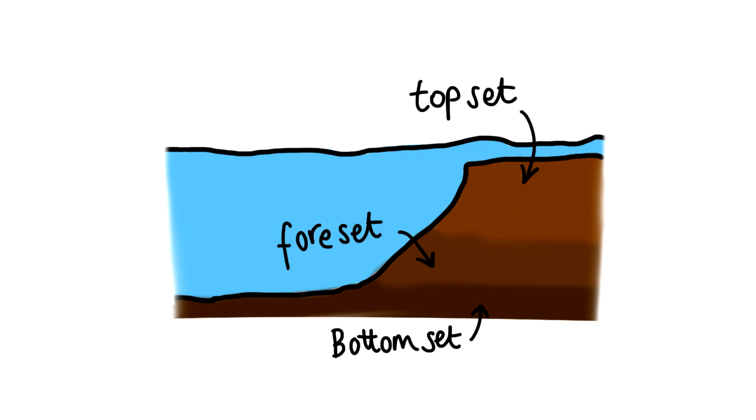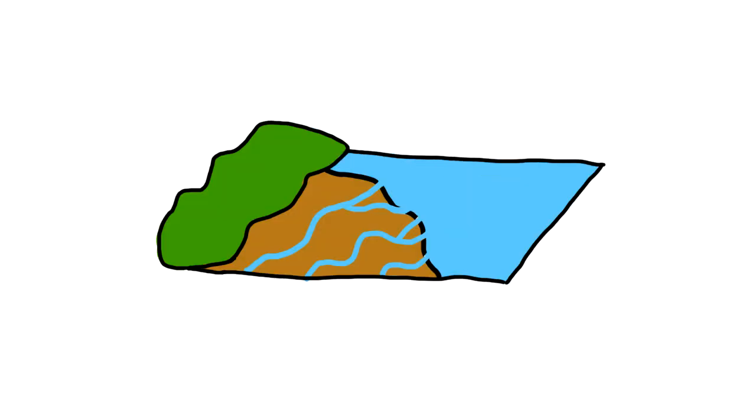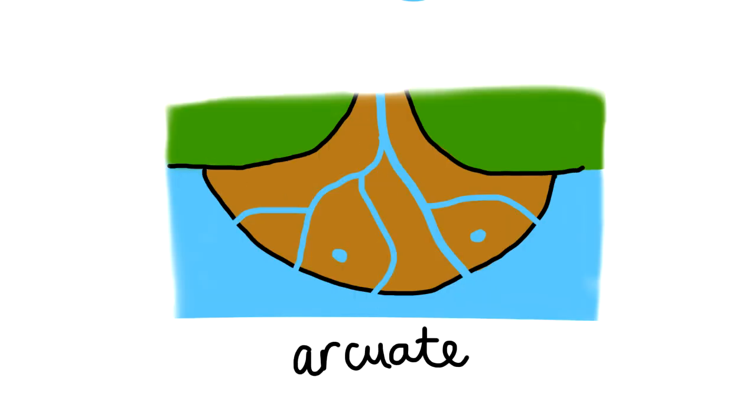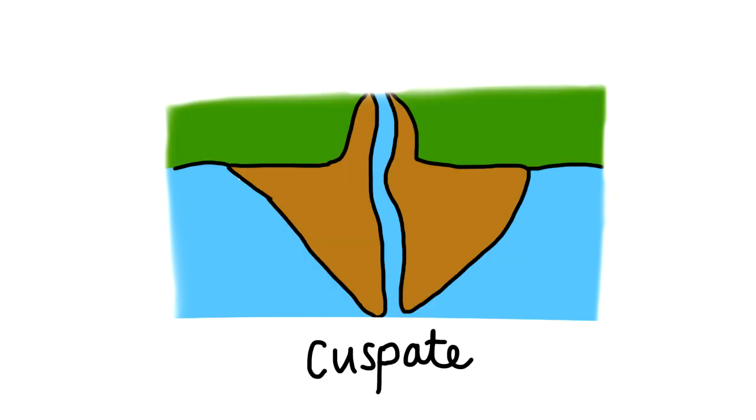And the top-set bed is composed of larger and heavier particles. The three primary delta shapes are the cuspate delta, the arcuate delta, and the bird's foot delta. Cuspate deltas are shaped like a curved V, and they are formed by gentle but opposing sea currents which spread the sediment out. An example of this would be the Ebro delta in Spain.